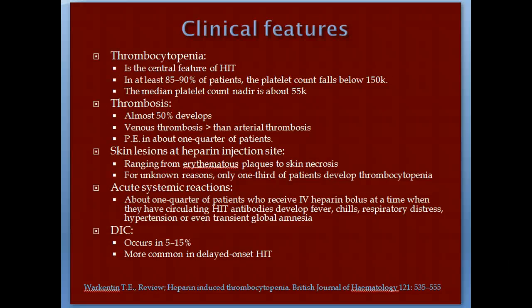Clinical features: thrombocytopenia is the central feature. In 90% of patients the platelet count drops below 150,000; the mean count is around 55,000. Fifty percent of patients develop thrombosis, and venous thrombosis accounts for about three-quarters of cases. Pulmonary embolism occurs in at least a quarter of cases — a very high incidence. Skin lesions can range from erythematous plaques to skin necrosis, and one-third of patients with skin lesions do not have thrombocytopenia. Acute systemic reactions occur in at least a quarter of patients who already have antibodies when they receive heparin boluses, ranging from fever to global transient amnesia. DIC occurs in 5 to 15 percent.